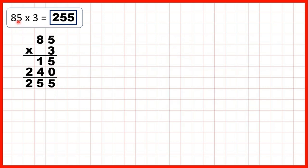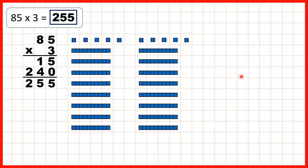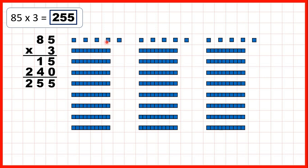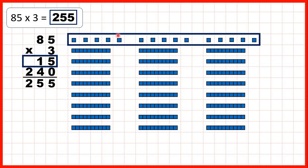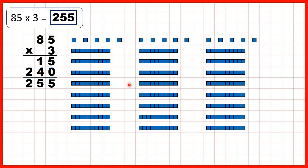Then for our last question, we had 85 times 3. 85 means we have 8 tens and 5 ones, and to multiply by 3, we can show what we have 3 times. You can see where we get 15, because we have 15 ones altogether here. And then below we have 24 tens, which is the same as 240. So putting all of what we have together gives us our answer, 255.